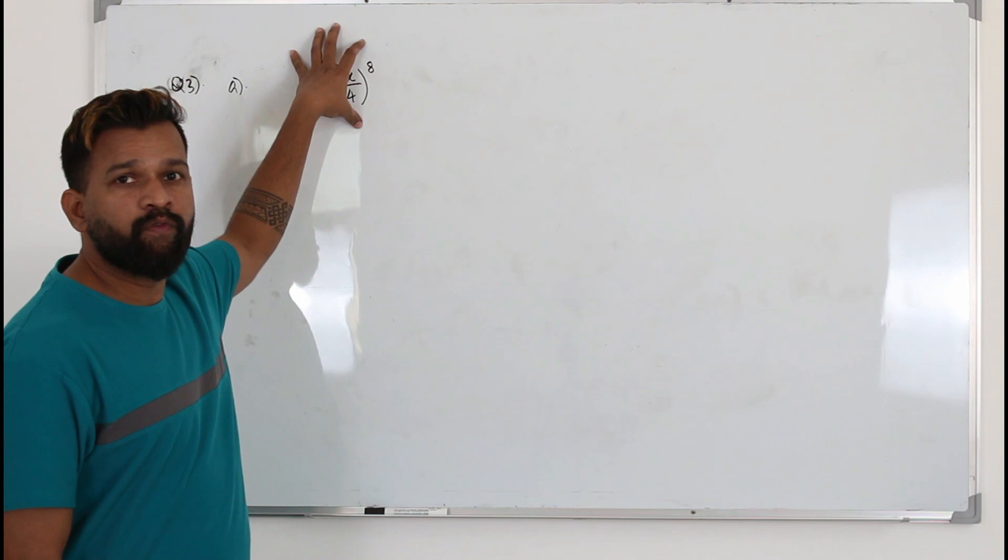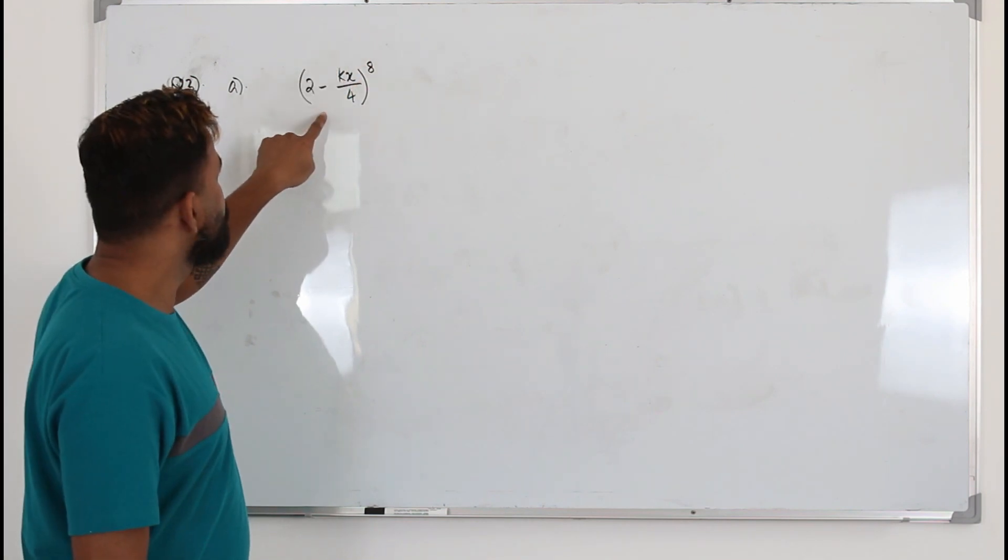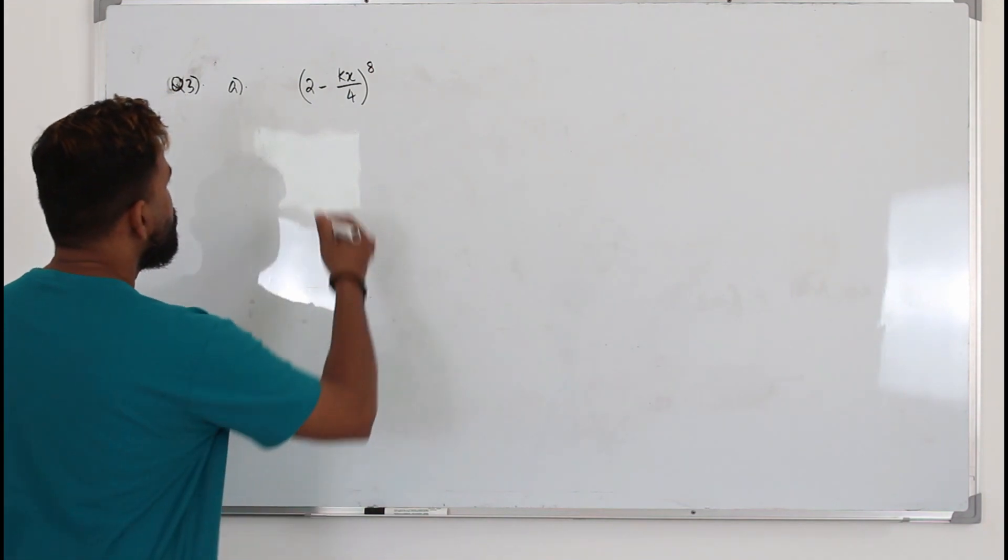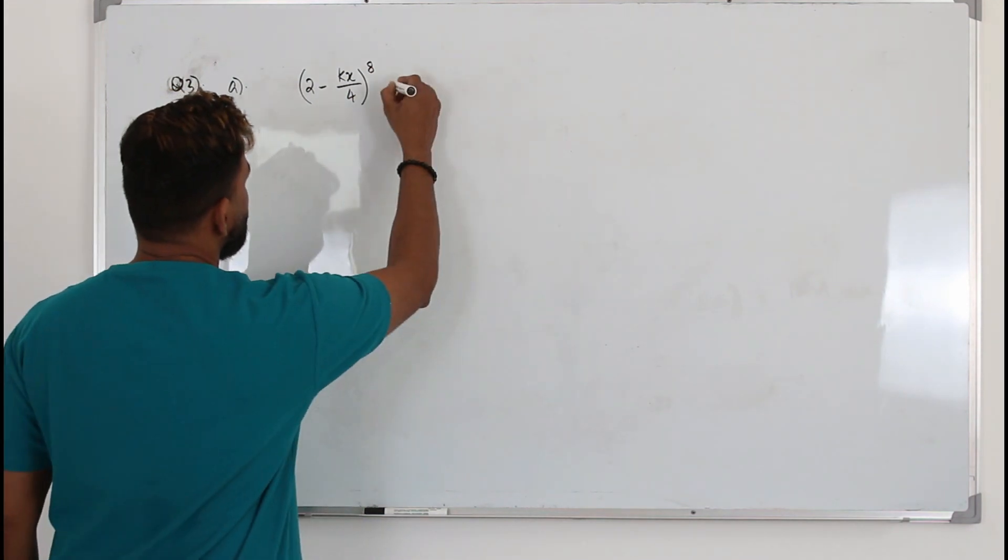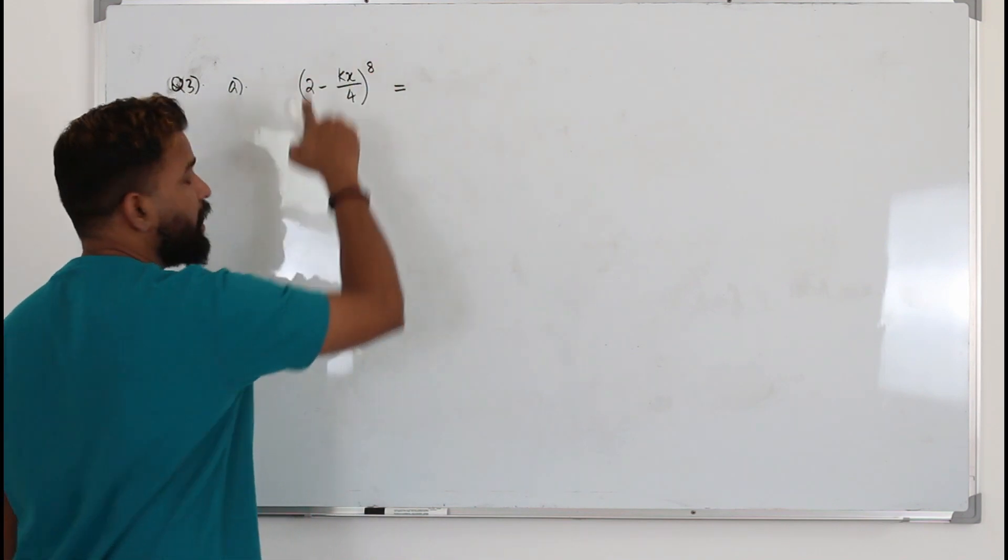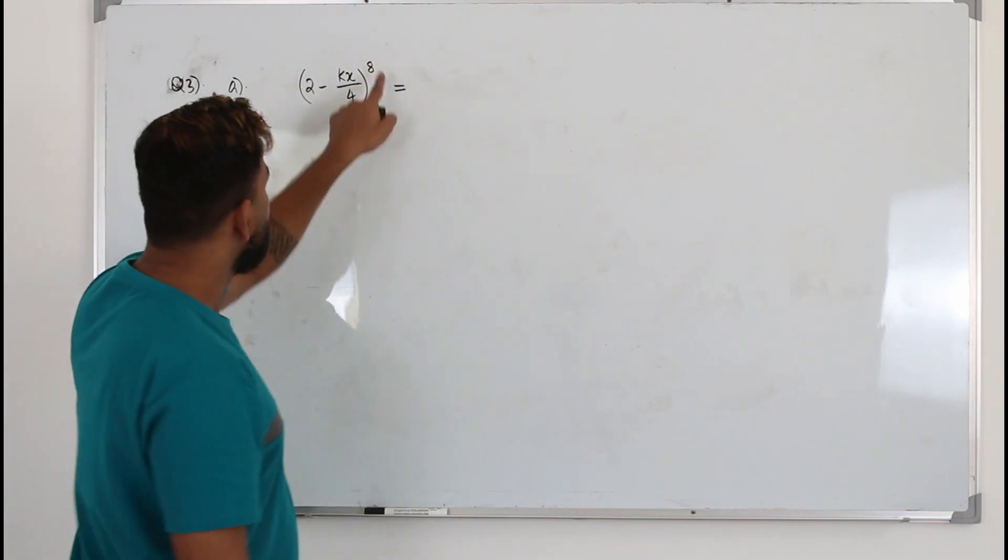Here they want you to find the binomial expansion of this, the first four terms of the binomial expansion. So the binomial expansion is this: (a + b)^n. a is the first term, b is the second term, n is the power 8.